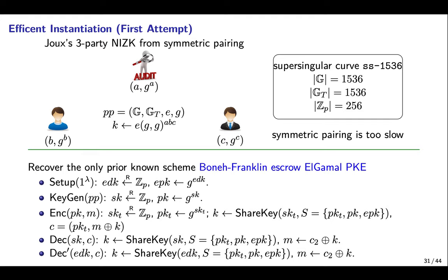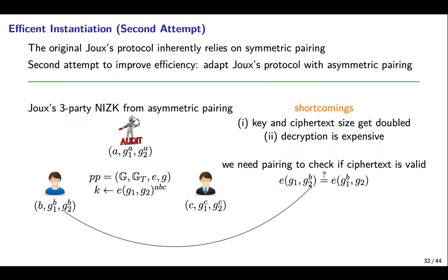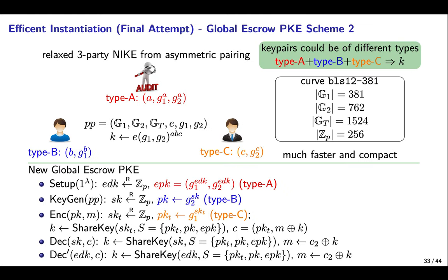However, that scheme is rather inefficient because symmetric pairing is too slow. The RUX protocol inherently relies on symmetric pairing, so a second attempt to adapt it with asymmetric pairing results in doubled key and ciphertext size and very expensive decryption. Our insight is that a relaxed version of NIKE suffices for global escrow PKE: the key pairs of NIKE could be of different types, and the shared key could be agreed from different-type key pairs. In light of this observation, we obtain an efficient global escrow PKE from asymmetric pairing.